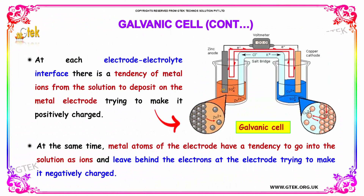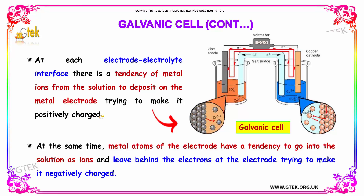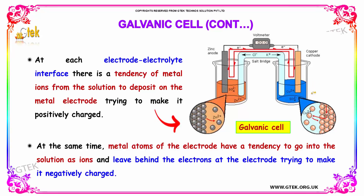At each electrode-electrolyte interface, there is a tendency for metal ions from the solution to deposit on the metal electrode, making it positively charged. At the same time, metal ions from the electrode have a tendency to go into the solution as ions, leaving behind electrons at the electrode and making it negatively charged.